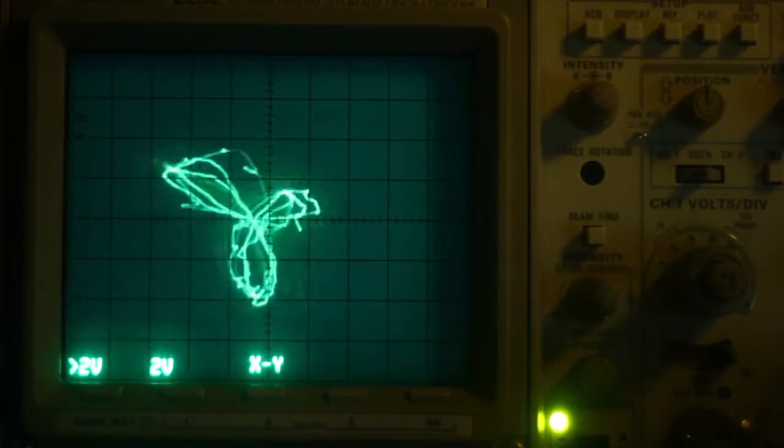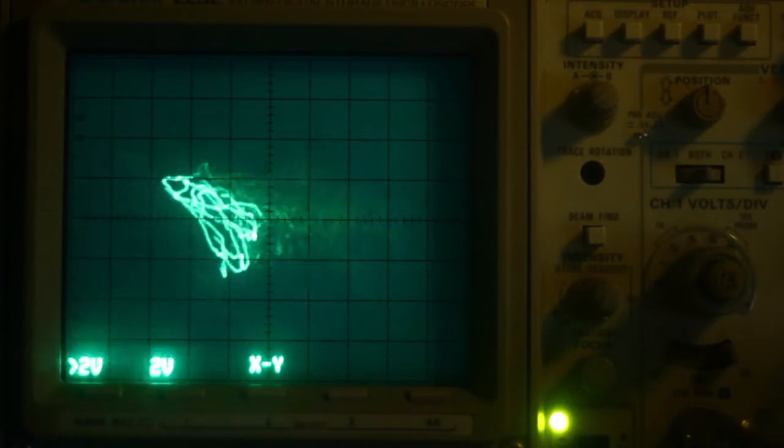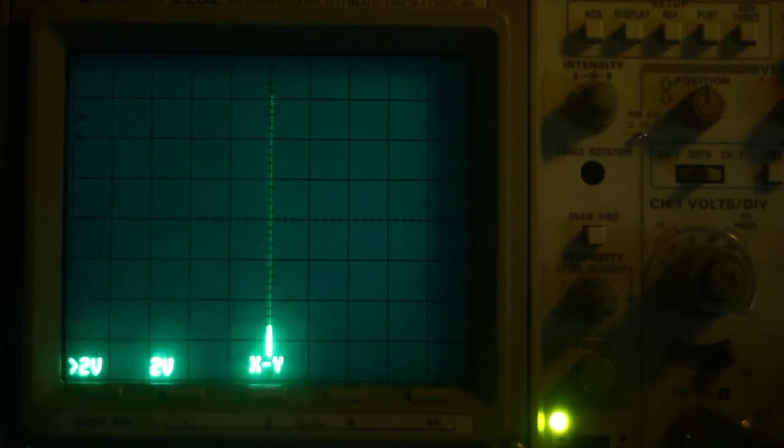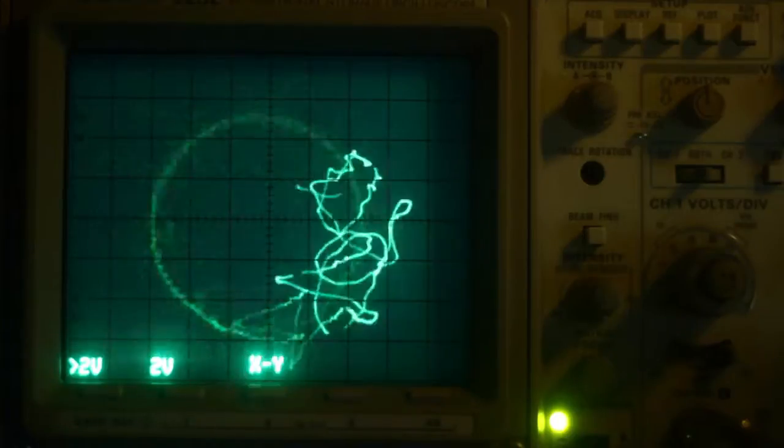Now first we need a sine wave on our horizontal deflection channel, and a cosine wave on our vertical deflection channel. Together, they add up to a beautiful circle.